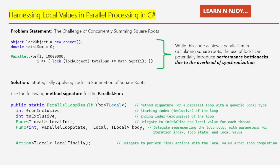Think of a group of volunteers cleaning up trash. If they all had to use one trash can it would take forever because they'd keep going back and forth. The smart thing is to give each volunteer their own smaller trash can, then empty those into the big one when full — making the whole process much faster. Similarly, when adding up lots of numbers we give each helper their own smaller basket, then combine all baskets into one big basket at the end.